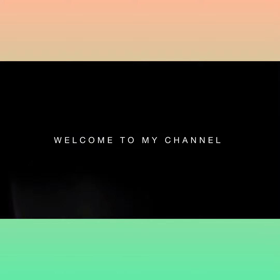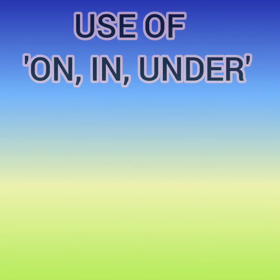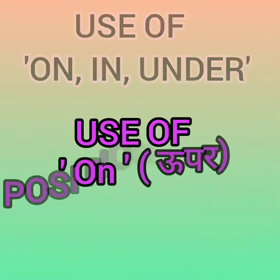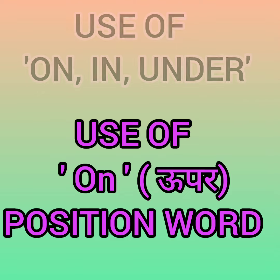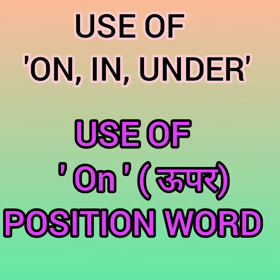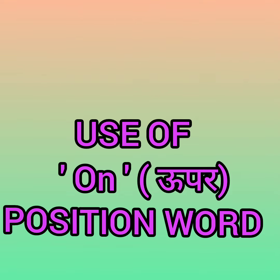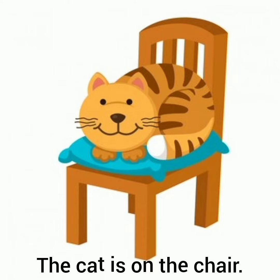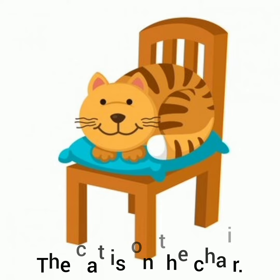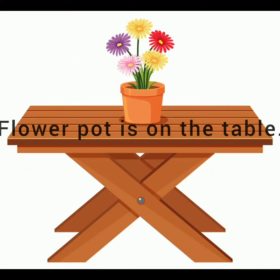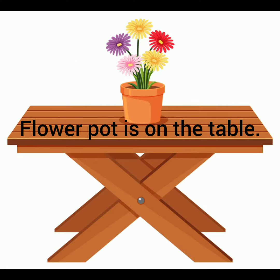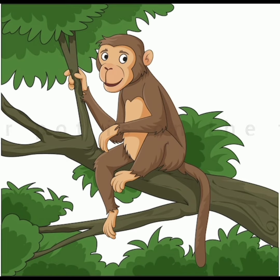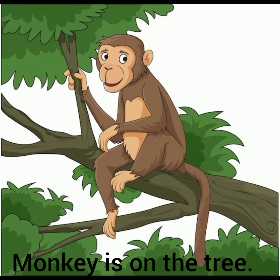Hello friends, welcome back to my channel. Today we will learn the use of 'in,' 'on,' and 'under' — position words. Let's start with 'on.' The cat is on the chair. The flower pot is on the table. The monkey is on the tree.